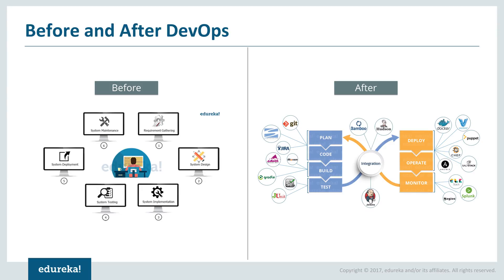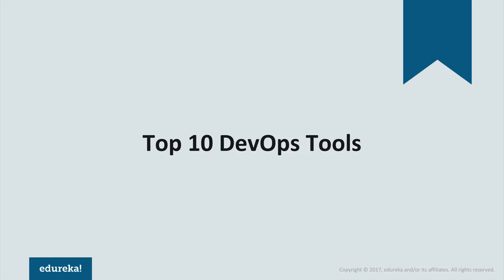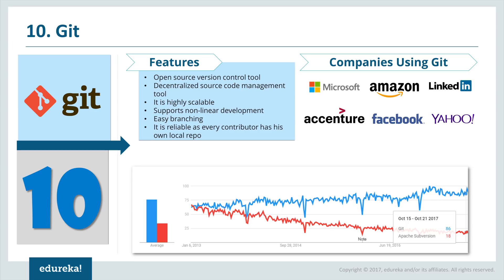If you want more details about DevOps, you can refer to the DevOps tutorial video. This video is entirely dedicated to the various DevOps tools you should master if you're looking to make a career in DevOps. There is an order to this list: first version control tools, then continuous integration, then continuous testing, then configuration management, and finally continuous monitoring.